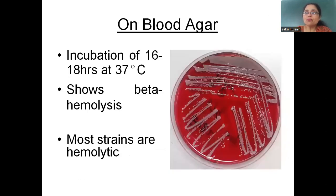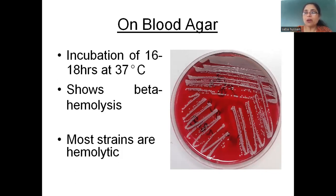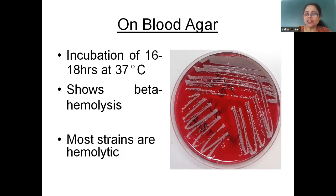Blood agar is an enriched media — not a simple media — and Staphylococcus can also grow on it. The best incubation period on blood agar is 16 to 18 hours at 37°C. Staphylococcus aureus shows beta hemolysis on blood agar. Hemolysis is of three types: alpha (partial), beta (total), and gamma (no hemolysis). The beta hemolysis — total discoloration — is a characteristic feature of Staphylococcus aureus.